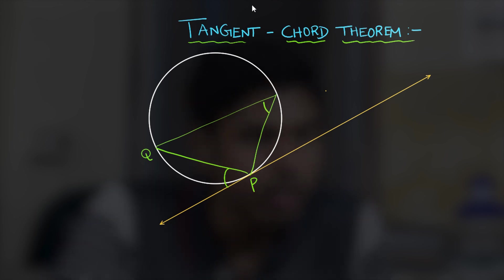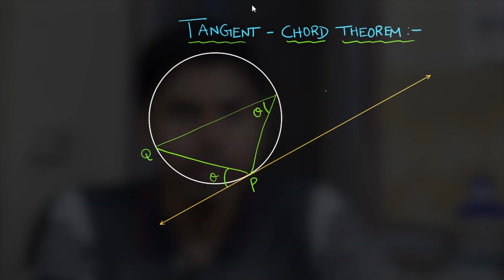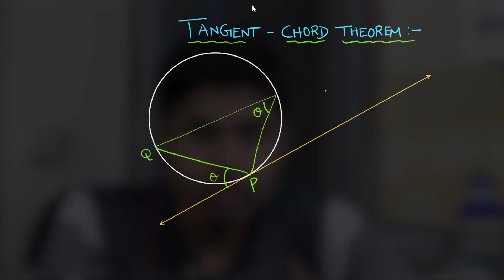As you could see the angles marked theta will be equal and this is the statement of tangent chord theorem. You may take the acute or obtuse angle but you have to make sure that the angle subtended is in the alternate segment of the angle that the arc pierces through.